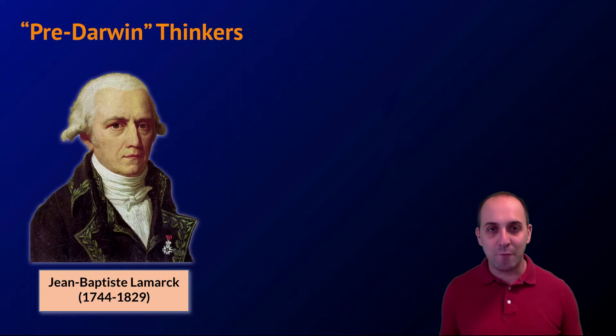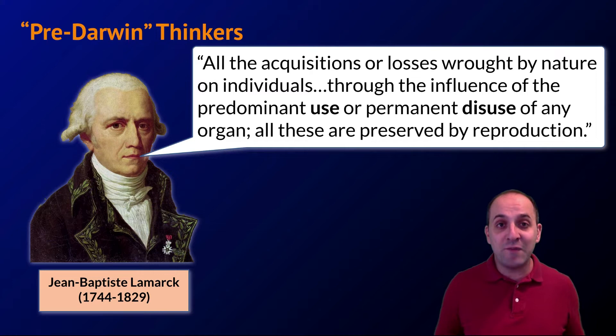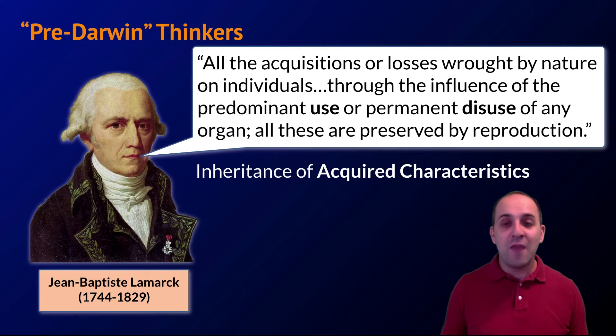Jean-Baptiste Lamarck's evolution was a notion of use or disuse — the idea that as individuals live their lives and use certain aspects of their anatomy, behavior, or physiology, those things would be strengthened and passed on in enhanced forms to the next generation. The opposite would also happen: structures and behaviors that individuals did not use would atrophy and be passed on in weakened forms.